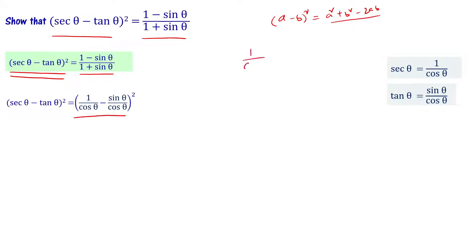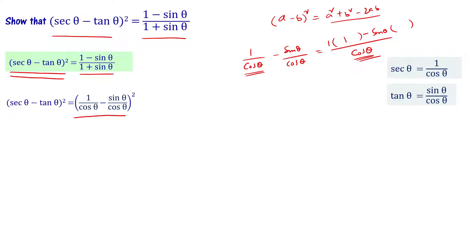Inside the bracket we have 1 by cos theta minus sin theta by cos theta. Taking cos theta as the common denominator, we get 1 minus sin theta by cos theta inside the bracket. So the entire left hand side expression becomes 1 minus sin theta divided by cos theta, whole square.